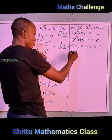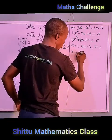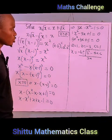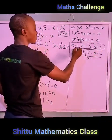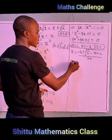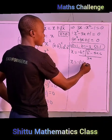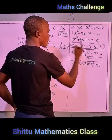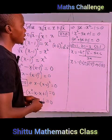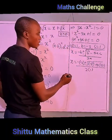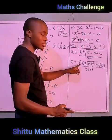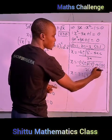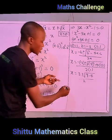The quadratic formula is x = [−b ± √(b² − 4ac)] / 2a. Plugging in our values: x = [−(−3) ± √((−3)² − 4·1·1)] / (2·1). This simplifies to x = [3 ± √(9 − 4)] / 2, giving x = [3 ± √5] / 2.